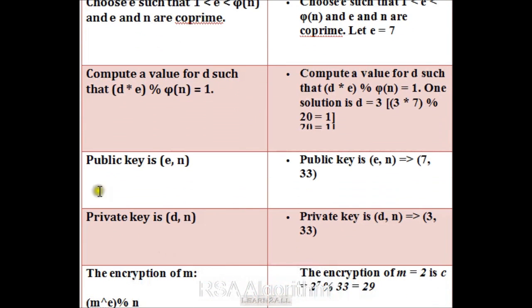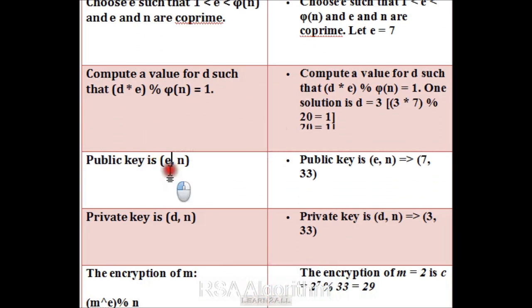In the sixth step, we have to choose the public key for the encryption method. In the seventh step, we have to choose a private key, which is D comma N.